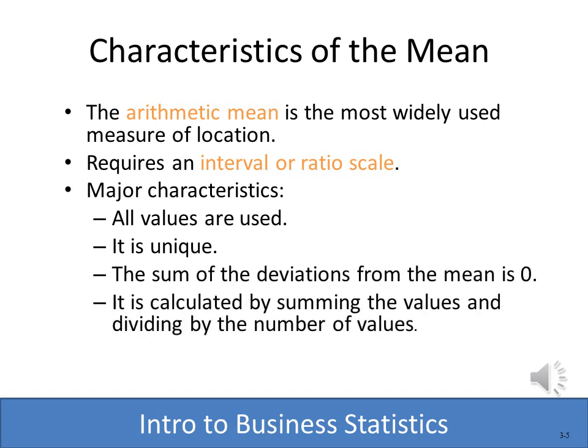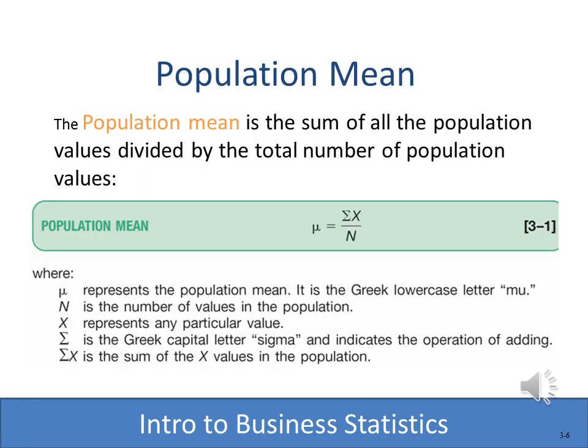The most common measure of central tendency is the mean, and we commonly call that the average. Now we talked about scales, and the average will require an interval or a ratio scale. Remember the difference between the two — the ratio scale has a true zero, in which zero really means zero. Now the population mean and the sample mean are actually computed the same way; however, we designate them a little bit differently.